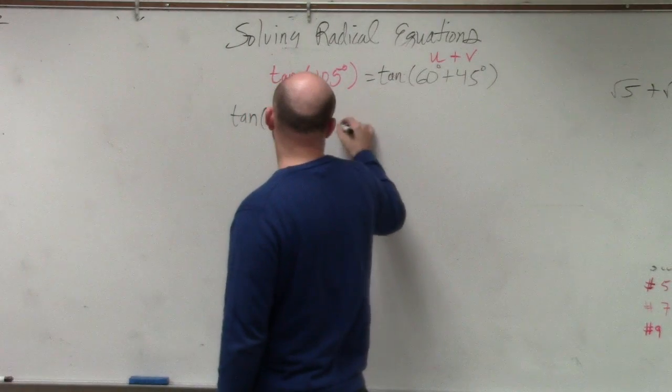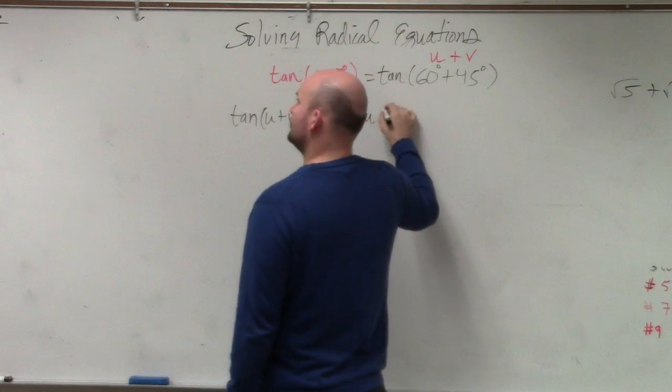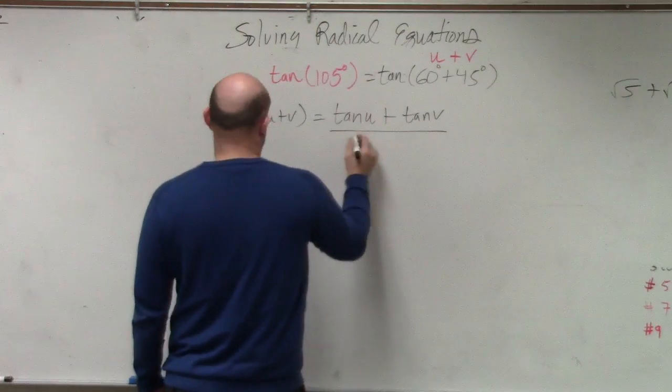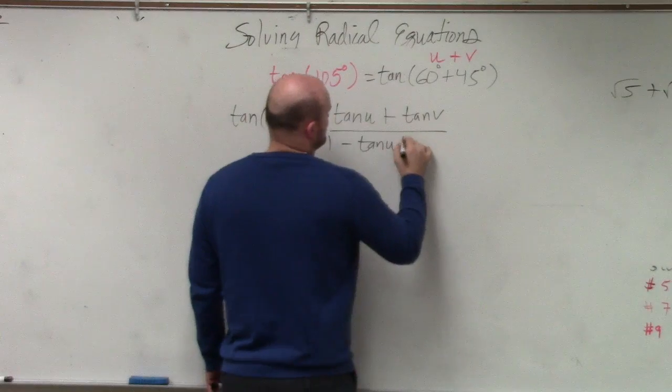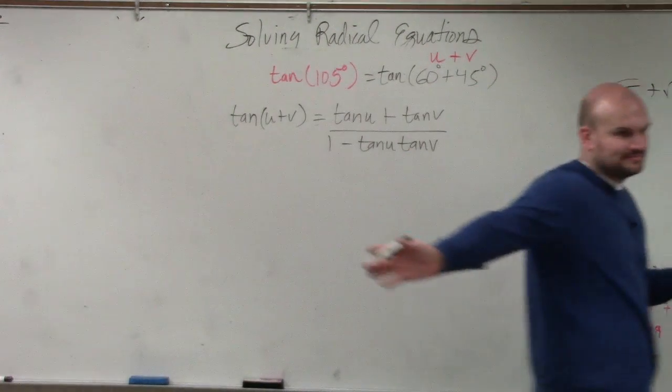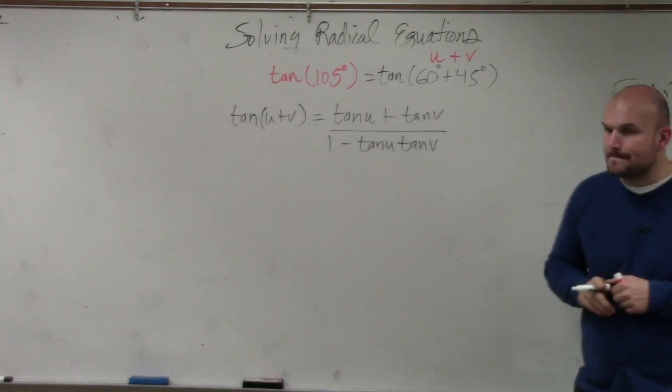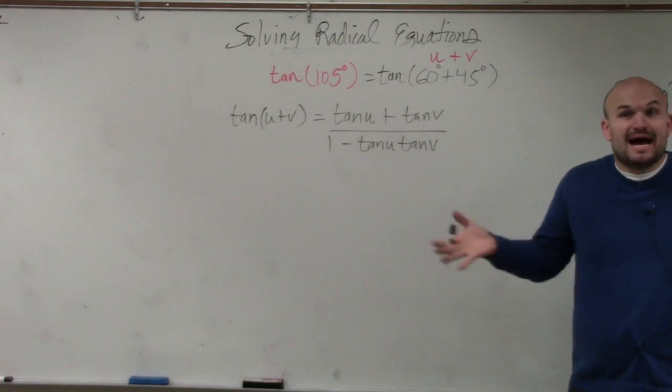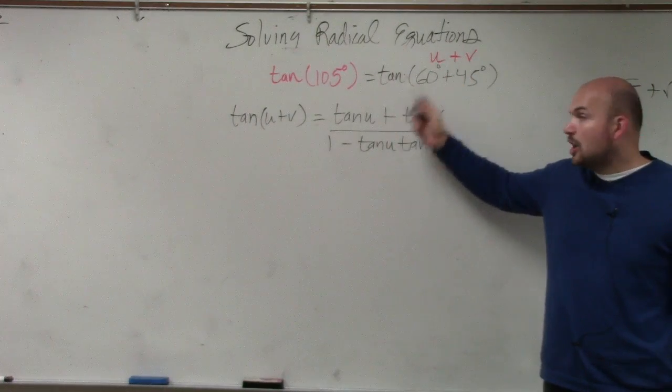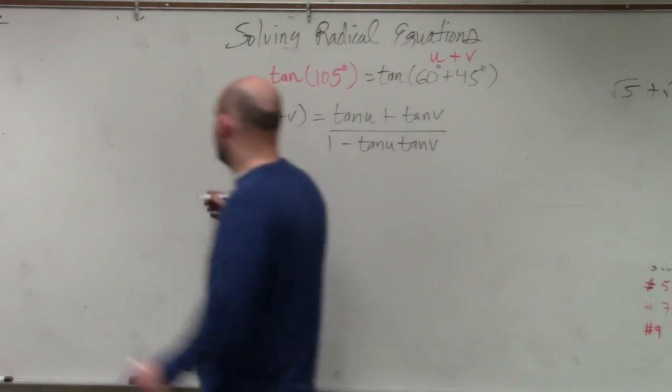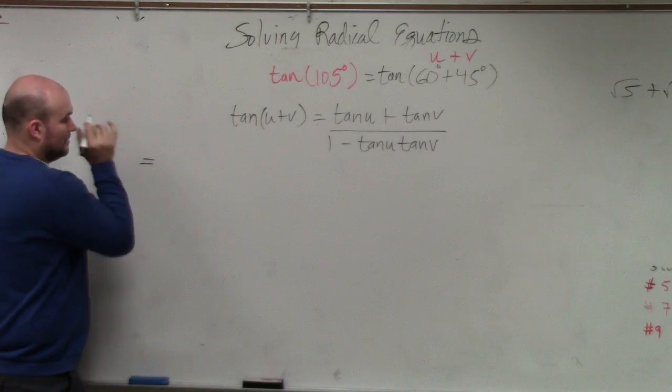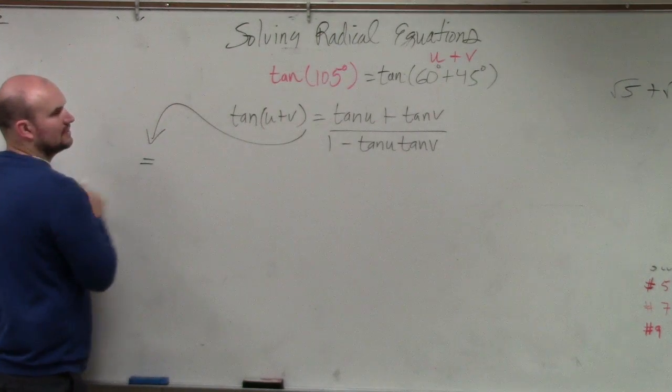So therefore, this then is going to become tangent of u plus tangent of v divided by 1 minus tangent of u times tangent of v. That is the formula I told you guys to write down. OK? Now, since we already have it broken apart, all we're simply going to do is plug in our u and our v. And I'm going to do the work over here, because it's going to be a couple of steps that we're going to use.